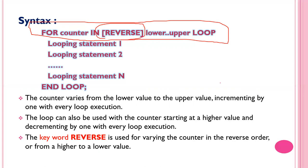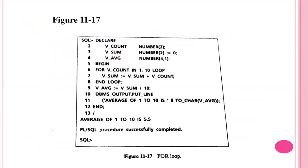By default, the counter starts at a lower value and is incremented by one with every loop execution. The keyword REVERSE is used to vary the counter in reverse order — from a higher to a lower value. This is the example of the same program written using a for loop. The for loop statement runs the counter from 1 to 10 with the FOR counter IN 1..10 LOOP syntax, ending with END LOOP.